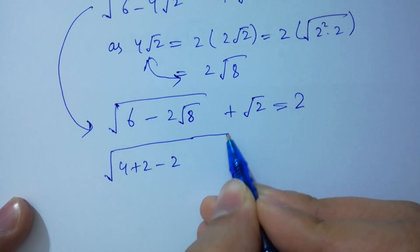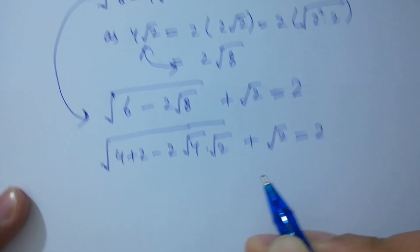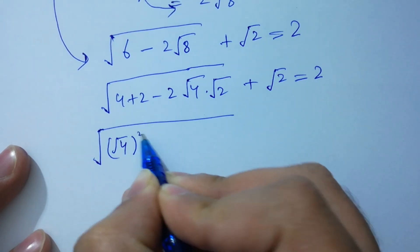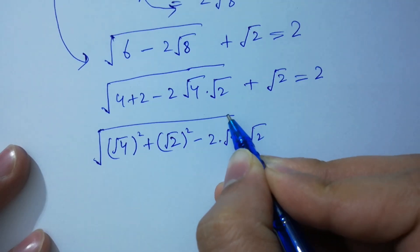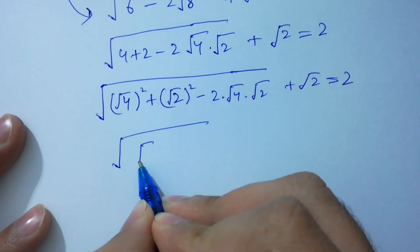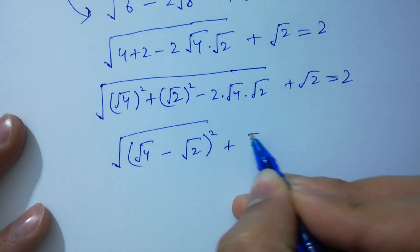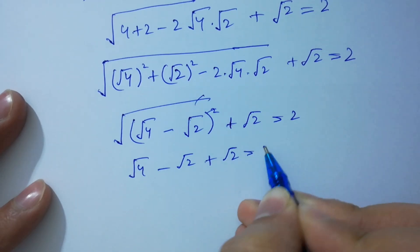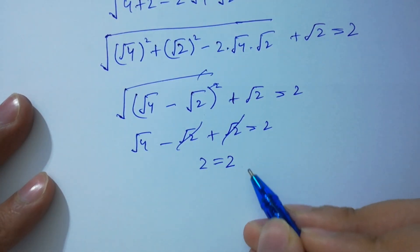Square root of 2 times square root of 8 is the same as square root of 4 times square root of 2, plus square root of 2, equals 2. Using the formula, 2 cancels from square root. We have square root of 4 minus square root of 2 plus square root of 2 equals 2. Square root of 2 and square root of 2 cancel, giving square root of 4 equals 2, so 2 equals 2, which satisfies the equation.